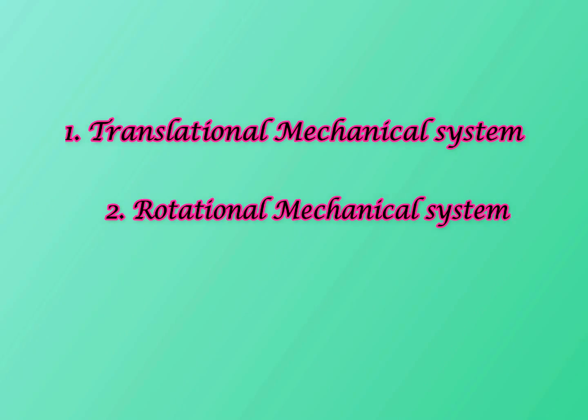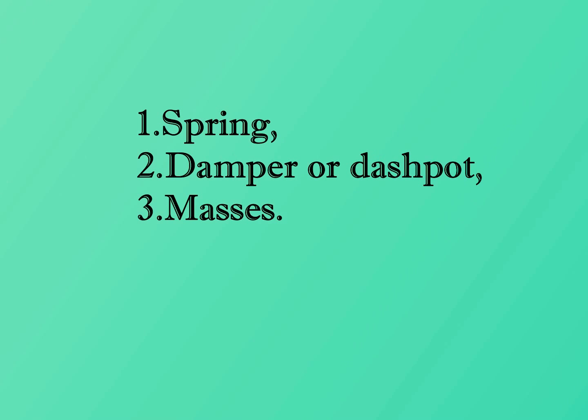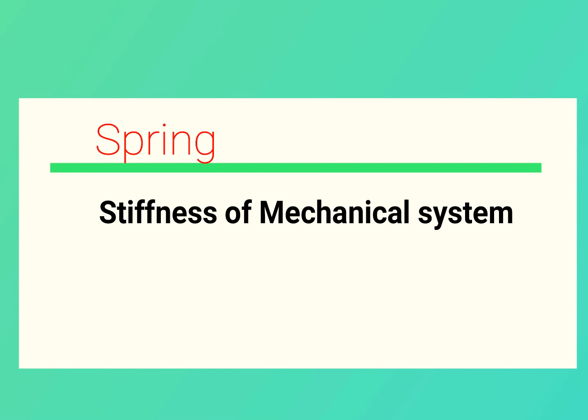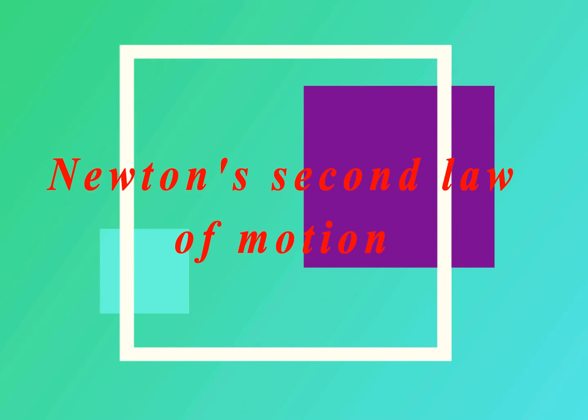Mechanical systems are categorized into two groups on the basis of types of motion: first is translational mechanical system, and second is rotational mechanical system. The basic building blocks are spring, damper or dashpot, and mass. Spring represents stiffness; damper or dashpot represents forces opposing the motion; and mass represents inertia or resistance to acceleration. Newton's second law of motion can be applied to any mechanical system for modeling.